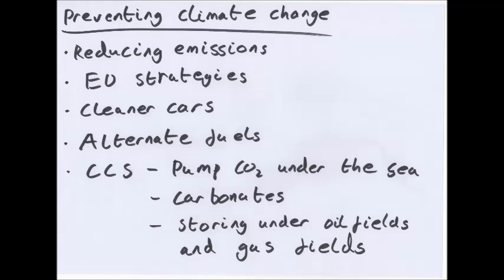The ozone layer. O3 is always being formed and broken down by UV radiation constantly. There are three types of UV radiation you need to know about: UVA, UVB, and UVC. UVA, 320 to 400 nanometres in wavelength. This always reaches the Earth. But since it's got the longest wavelength, it's got the shortest frequency, so less energy.